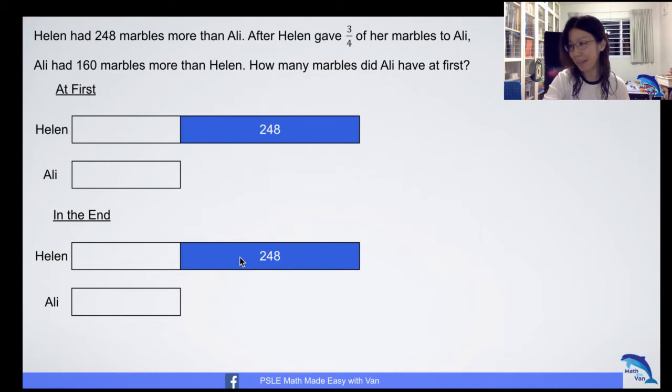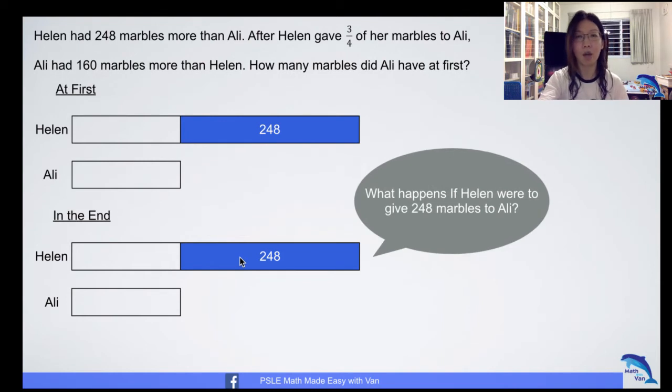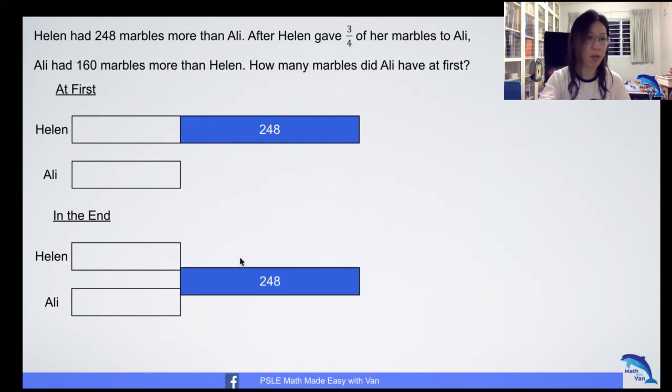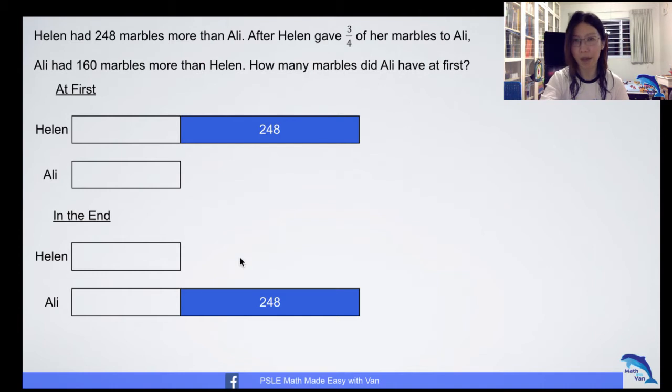Now, the same thing - I want you to ask your child what happens when this happens. Don't give them the solution yet. Ask what happens if Helen were to give 248 marbles to Ali, exact same thing as what I did just now. You would have noticed that Ali would now have 248 marbles more than Helen.